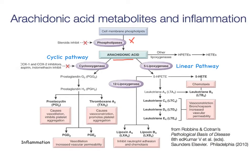Once the arachidonic acid is cleaved, it can either undergo a linear or cyclic pathway to produce different eicosanoids. With the linear pathway, the arachidonic acid is further metabolized by the lipoxygenase enzymes, resulting in formation of the leukotrienes and lipoxins.